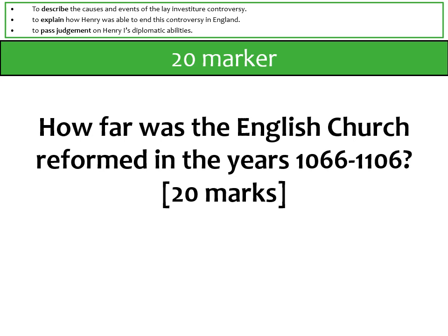The question is: how far was the English church reformed in the years 1066 to 1106? We're looking at the relationship between the church and three different leaders. I would structure it as three separate paragraphs — one on William I, one on William II, one on Henry I — and for each, talk about whether the church was reformed during their particular period, considering the resisting practices of English kings and Archbishop Lanfranc's reforms.